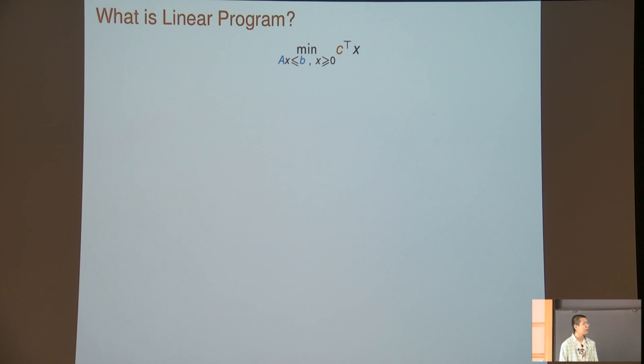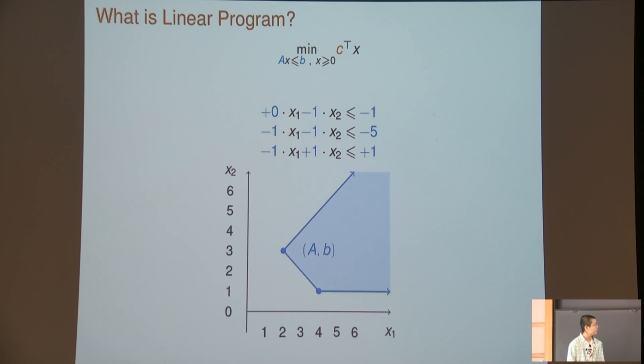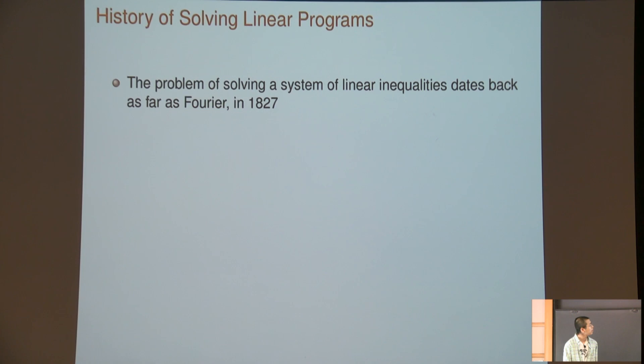I will first talk about the optimization part. These are joint works with Michael Cohen and Yin Tat, and also Zhao Zhu and Yuan Gili. So I will start with linear programs. What is the definition of a linear program? You give a matrix and two vectors. Here is a concrete example of a linear program in two dimensions. If I give you a matrix A and vector b, they form a convex body in this two-dimensional space. For example, if your vector c is like this, you design the angle of your line, and the goal of a linear program is to push this line until you touch the boundary.